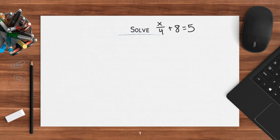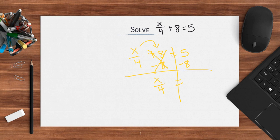Now we get into more division. I have x divided by 4 plus 8 equals 5. I draw my line down my equal sign. x divided by 4 is together, so I need to get rid of this plus 8 first. The inverse of adding is subtracting, so I subtract 8 on both sides. Plus 8 minus 8 cancels out, leaving x over 4 equals 5 minus 8, which is negative 3. x over 4 means I'm dividing, so I multiply by 4 — shown in parentheses. 4 times x divided by 4 cancels out, leaving x. Negative 3 times 4: 3 times 4 is 12, but negative 3 times positive 4 is negative 12. So x equals negative 12.